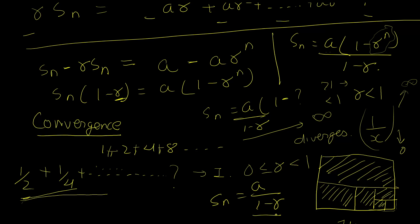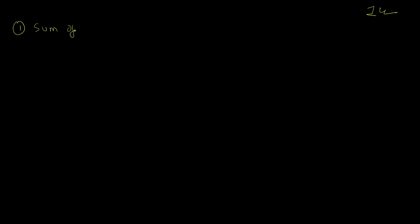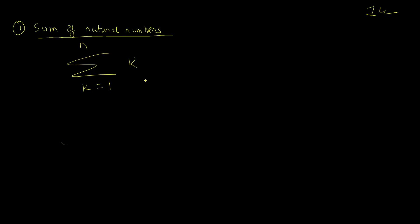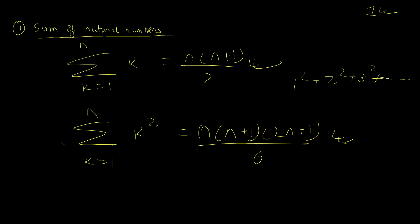Now let's look at some useful series formulas. The sum of the first n natural numbers — the summation of k from k equals 1 to n — equals n(n+1) divided by 2. This follows directly from the arithmetic series sum formula and can also be proved by mathematical induction. The sum of squares — one squared plus two squared plus three squared and so on — has its own formula, also provable by induction.